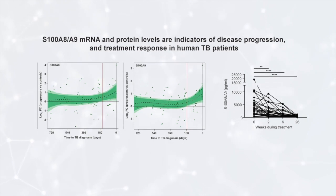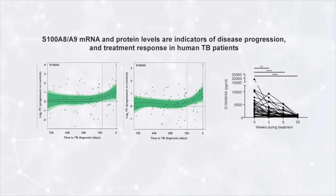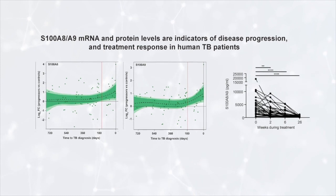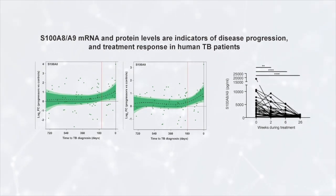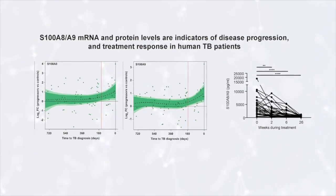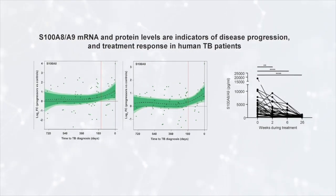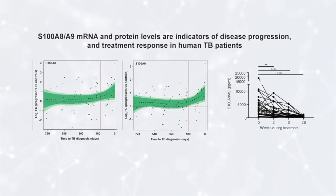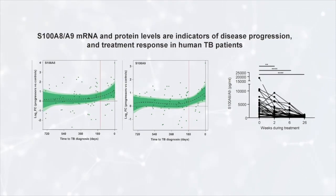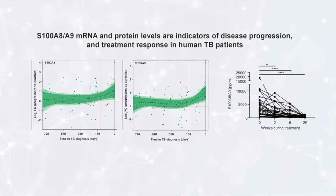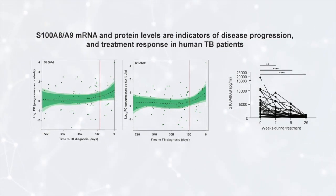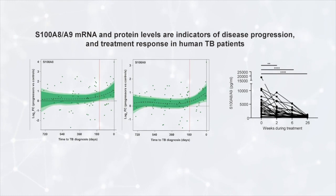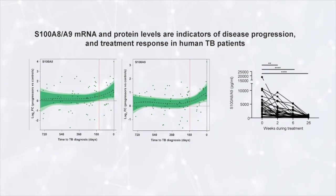We also monitored the level of expression of S100A8A9 protein in the serum of patients who received chemotherapy for TB disease. We found that patients who responded very well to TB treatment dropped the levels of expression of this protein within two weeks of starting treatment. However, in patients that were not cured and did not respond to treatment, the levels of S100A8A9 remained unchanged.